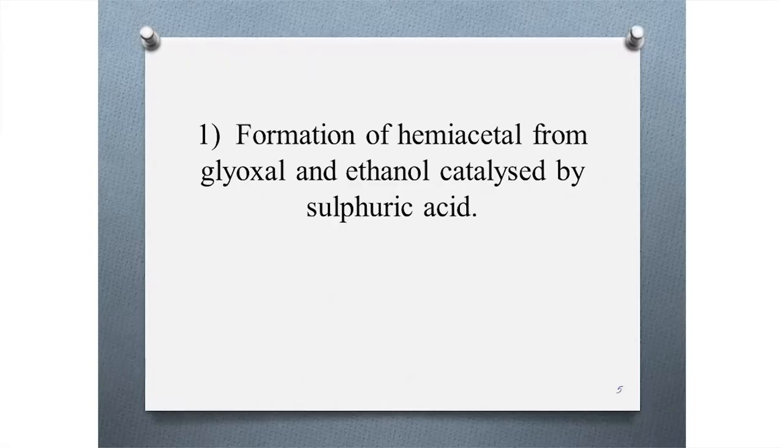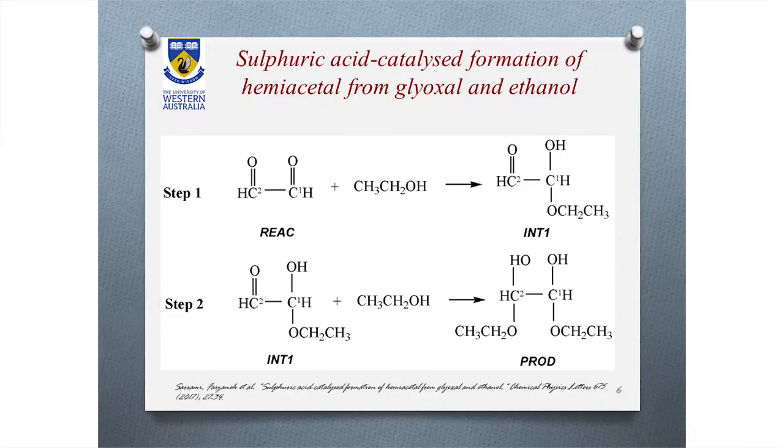The first reaction we discuss is the formation of hemiacetal from glyoxal and ethanol, catalyzed by sulfuric acid. Glyoxal is the simplest dialdehyde generated in the atmosphere through the oxidation of volatile organic compounds. It can react with two ethanol molecules in two steps: the first step is the attack of ethanol on carbon number one, leading to the hemiacetal; the second step involves another ethanol molecule attacking carbon number two, resulting in the dihemiacetal.